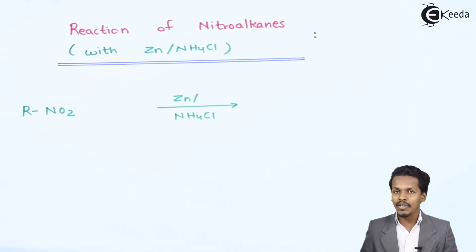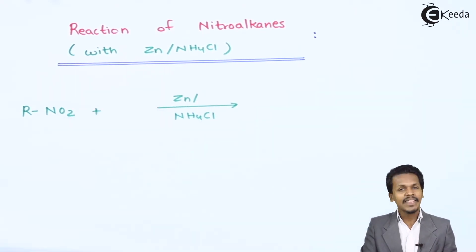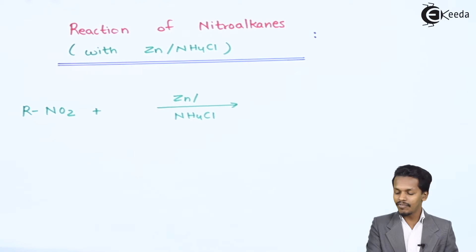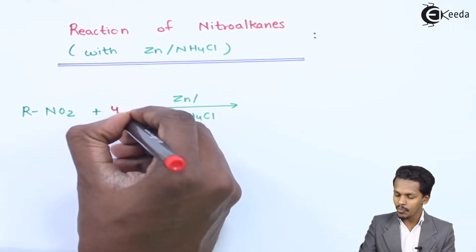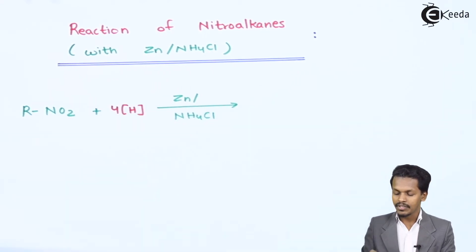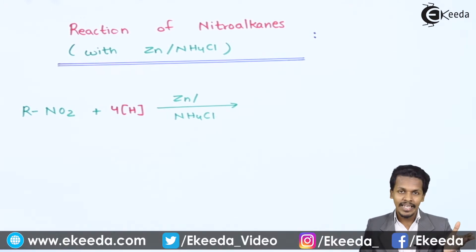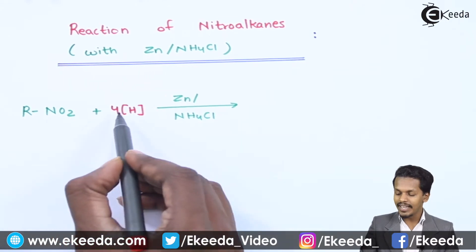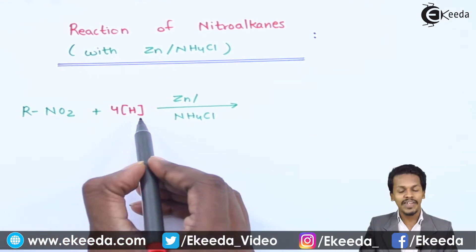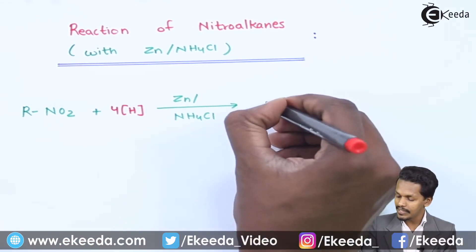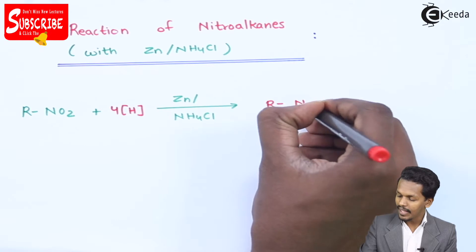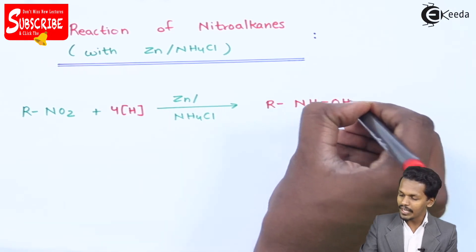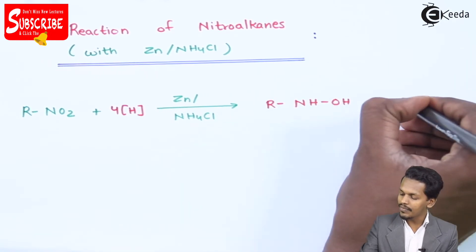When zinc reacts with NH4Cl, it will produce nascent hydrogen. Here, four moles of nascent hydrogen are produced. So unlike the previous reaction, here RNO2 will react with four moles of nascent hydrogen to give a different product.